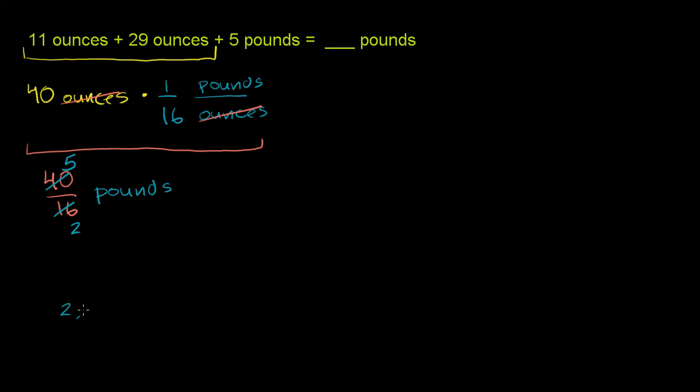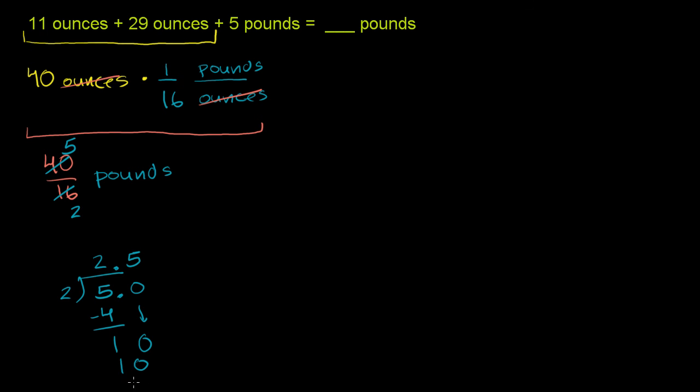2 goes into 5 two times. 2 times 2 is 4. Subtract, you have a remainder of 1. We want a decimal, so let's put the decimal right there and bring down a 0. 2 goes into 10 five times. 5 times 2 is 10, and we have no remainder. So this is exactly 2.5, which makes sense. 5 over 2 is the same as 2 and 1 half, which is 2.5.